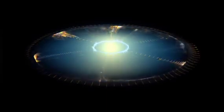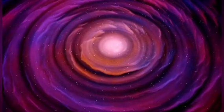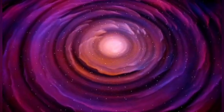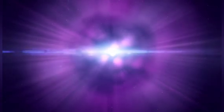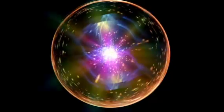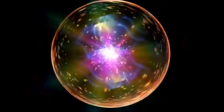For instance, elevated levels of iron-60, a radioactive isotope created in supernovae, have been discovered in ocean floor sediments and lunar regolith. This finding indicates that Earth may have been impacted by supernova ejecta in relatively recent geological history, perhaps within the last few million years.